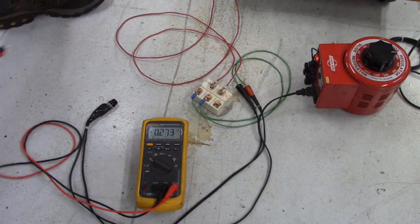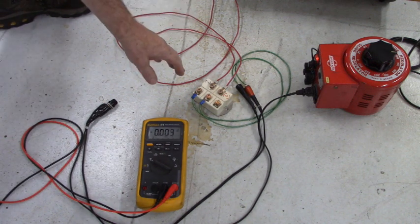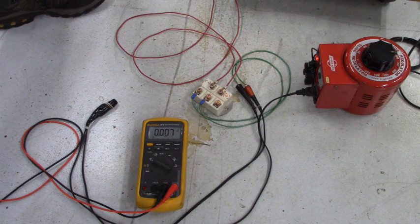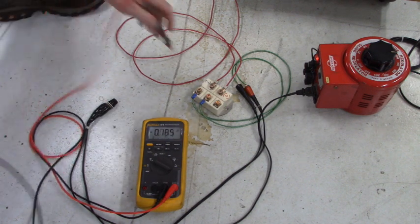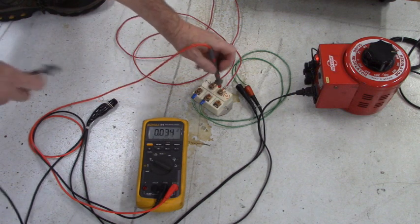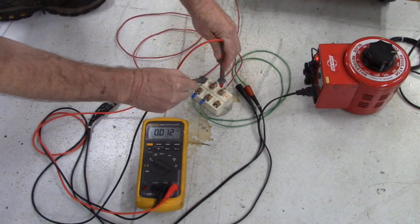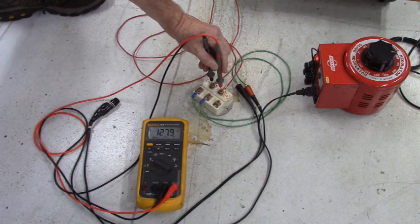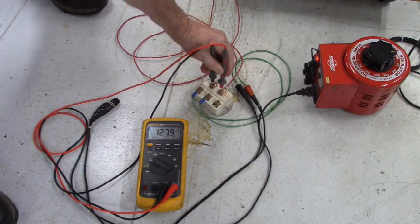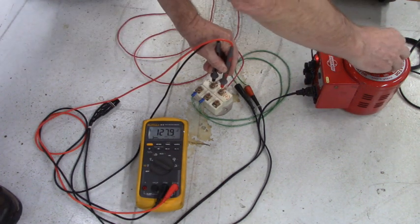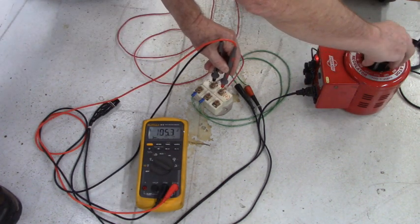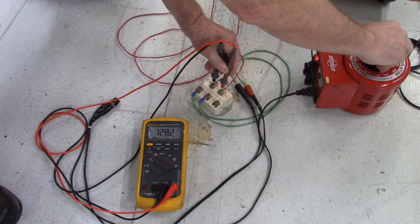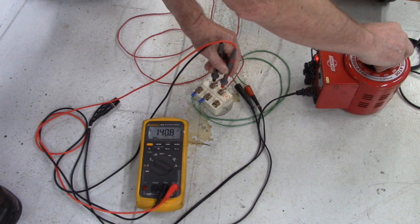Now that we have our connections of the bridge rectifier to the fields, white and green wire, I put my red lead on plus of the bridge rectifier, black lead on minus of the bridge rectifier, and I'm going to increase the variac until we have 150 volts DC.